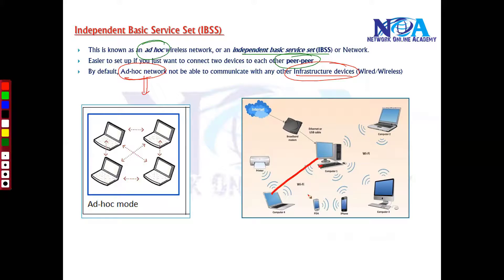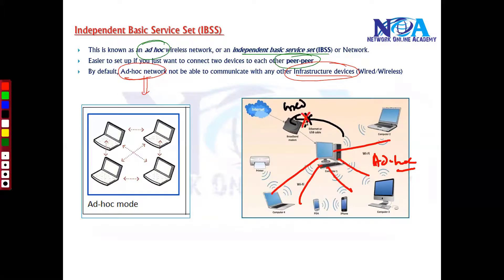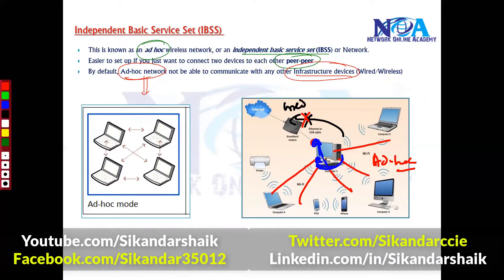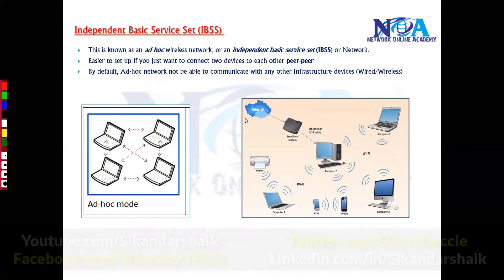When you try to connect through your ad-hoc network with a specific SSID and you want to connect this network to the wide network, by default it's not possible because there is no centralized access point. You can do some kind of bridging of this interface to other interfaces to provide connectivity, but by default that is not possible.